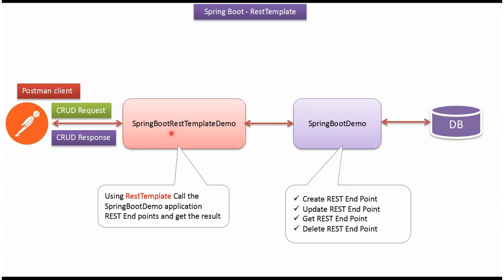And here you can see the Spring Boot REST Template Demo, which is another Spring Boot Application. In this Spring Boot Application, using REST Template, we will call the Spring Boot Demo Application's different endpoints and get the result. I will use Postman Client to send requests to the Spring Boot REST Template Demo, and the request goes to Spring Boot Demo, then the DB, and finally the response goes back to the Postman Client.